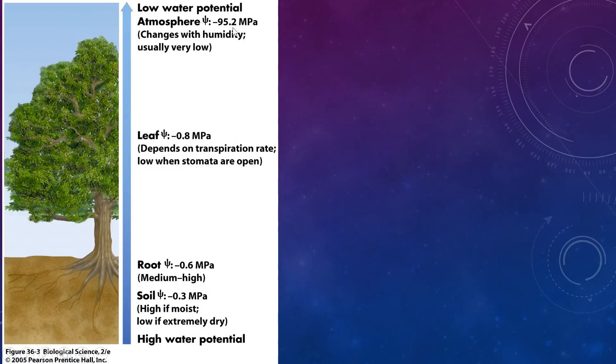Here's an example showing water potential at different places in a tree. Notice that the water potential down here in the soil is lower than that in the roots, so the water will move from the soil to the roots to where it's more negative. And then again, it will move, the leaf is even more negative, so it will move from a root to a leaf. So it's just showing the direction that the water is moving.